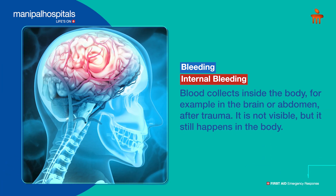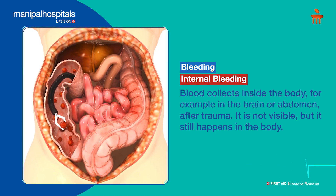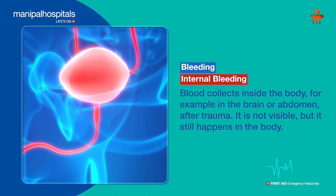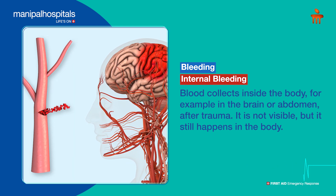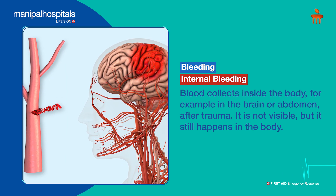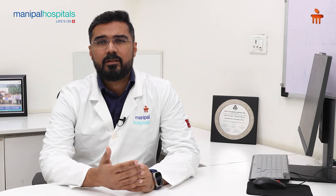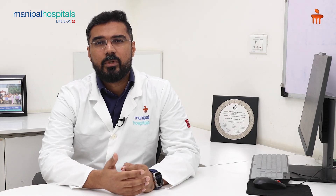Internal bleeding, like having an internal injury in the brain or internal bleeding in the abdomen due to trauma, is when you cannot see the blood outside of the body. That is what is called internal bleeding — there is bleeding happening inside of the body but not outside, so we cannot appreciate that the bleeding is actually occurring.